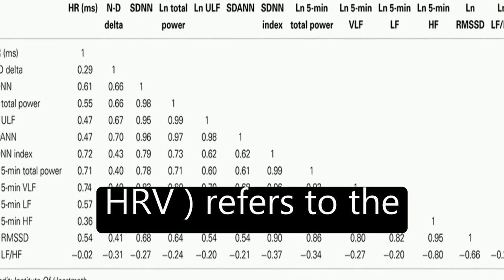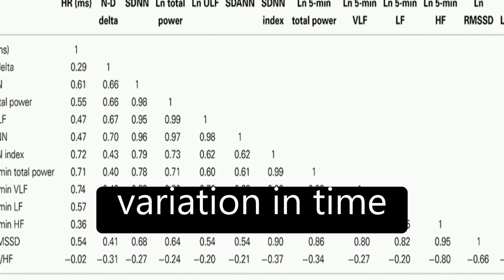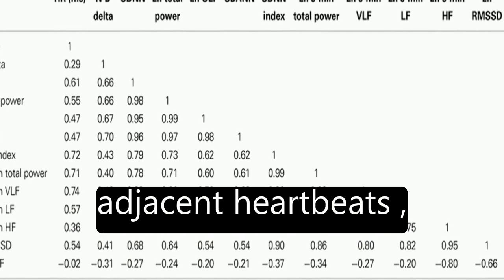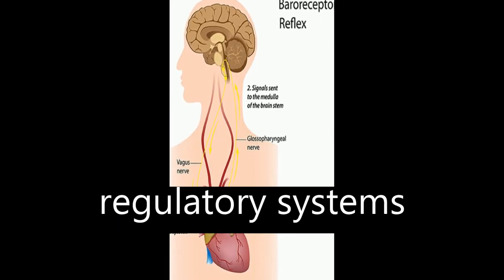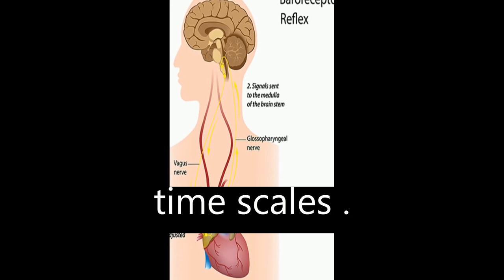Heart rate variability, HRV, refers to the variation in time intervals between adjacent heartbeats, resulting from the interplay of multiple regulatory systems operating on different time scales.